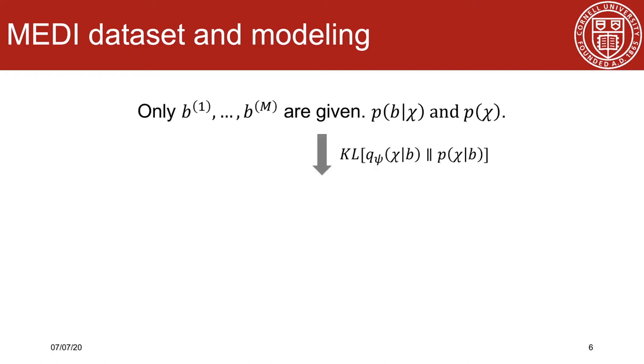We then use the KL divergence again to measure the distribution similarity. After derivation, this KL divergence can be decomposed into two terms that depend on the prior, the likelihood, and the approximate posterior distribution.